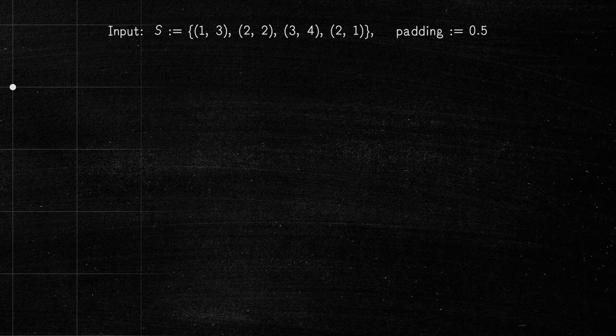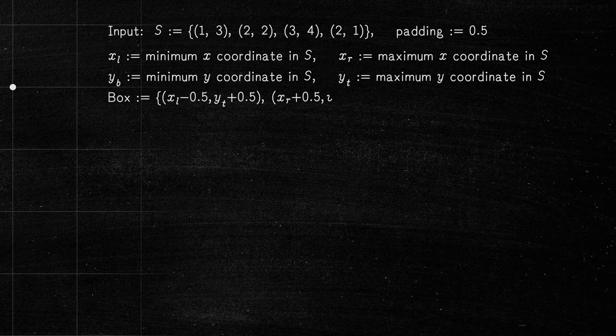Here is how to do it. First, we create a boundary box that encloses the points as follows. Find the minimum and maximum coordinates among the points and separate them by a given padding.